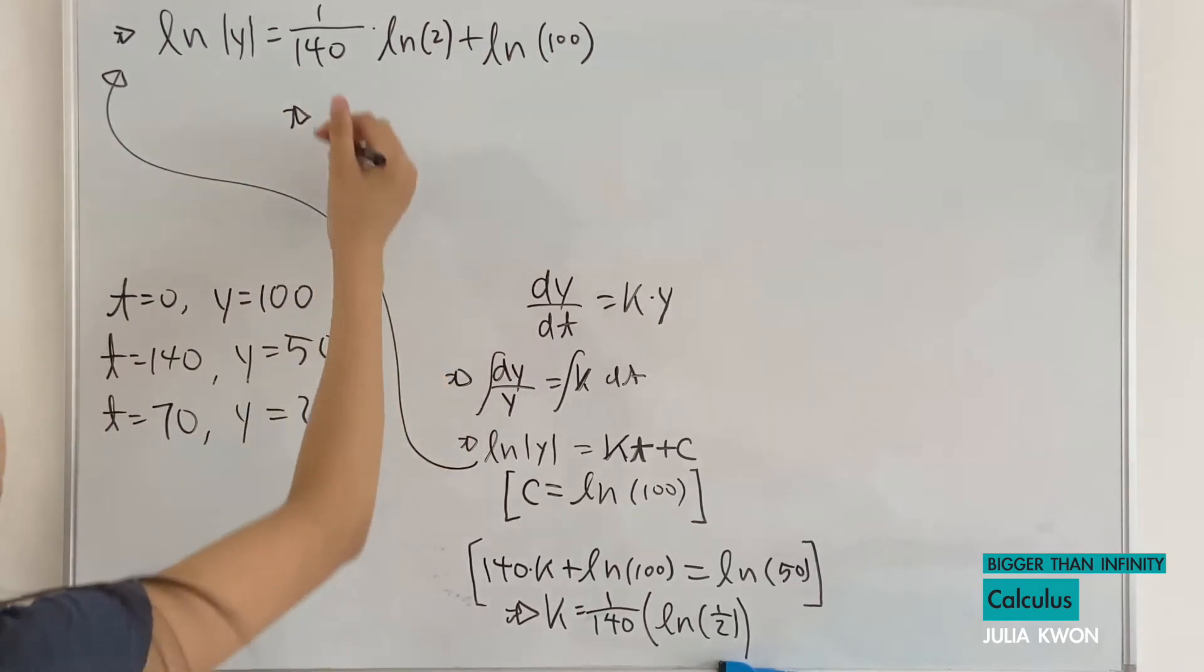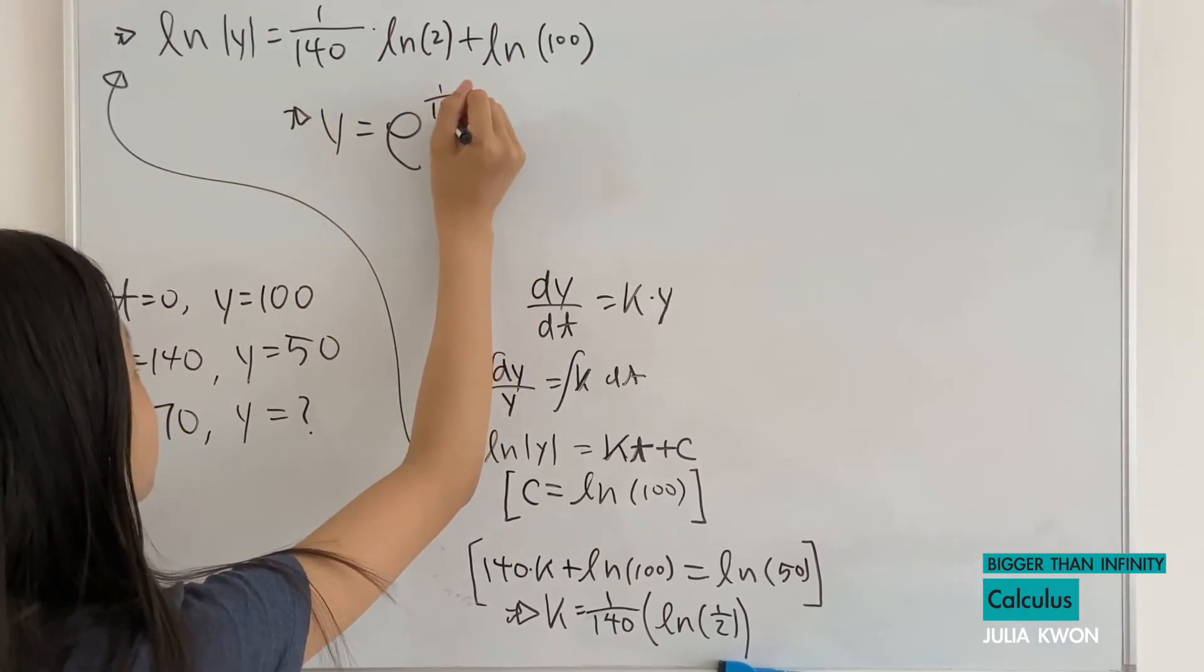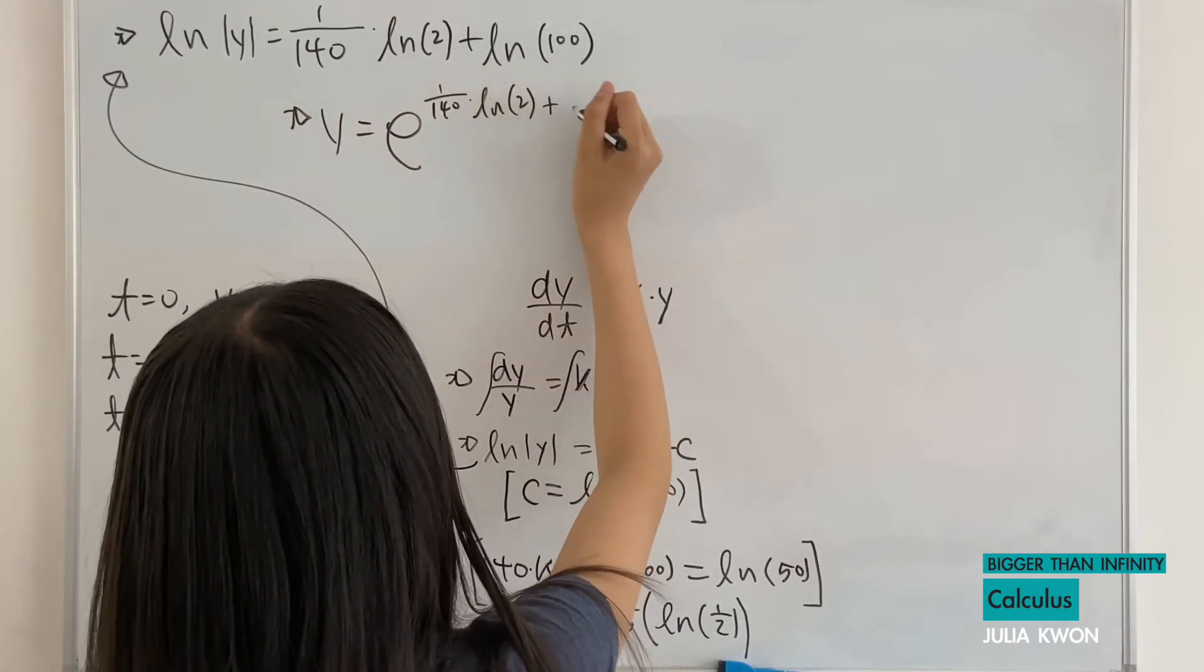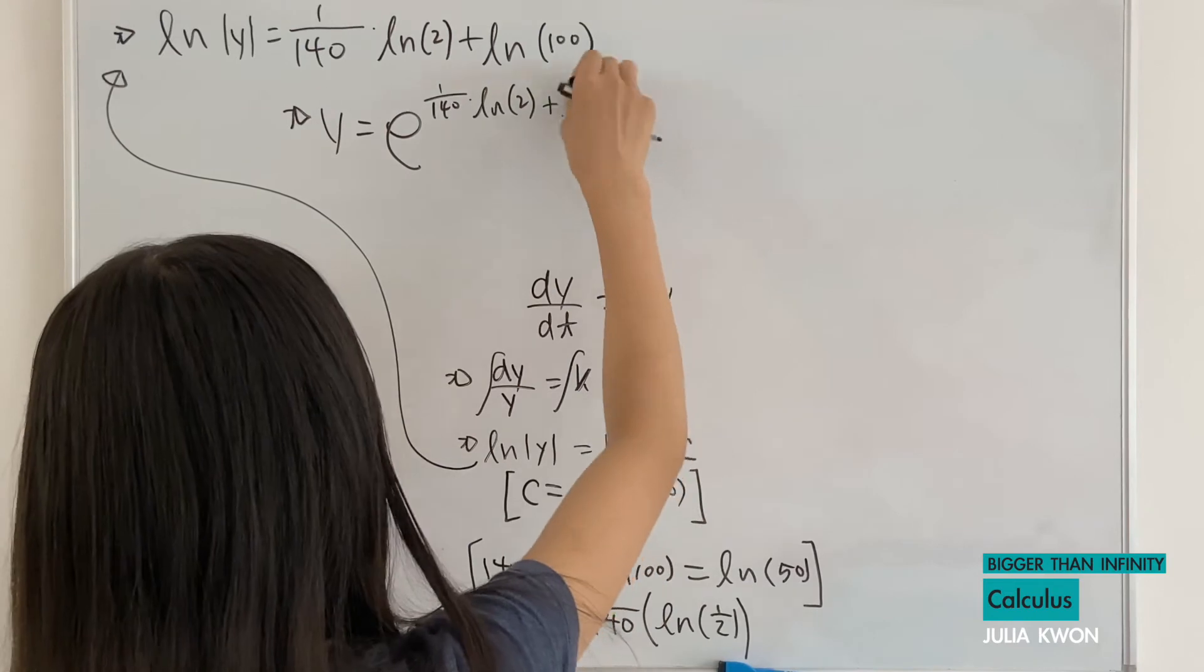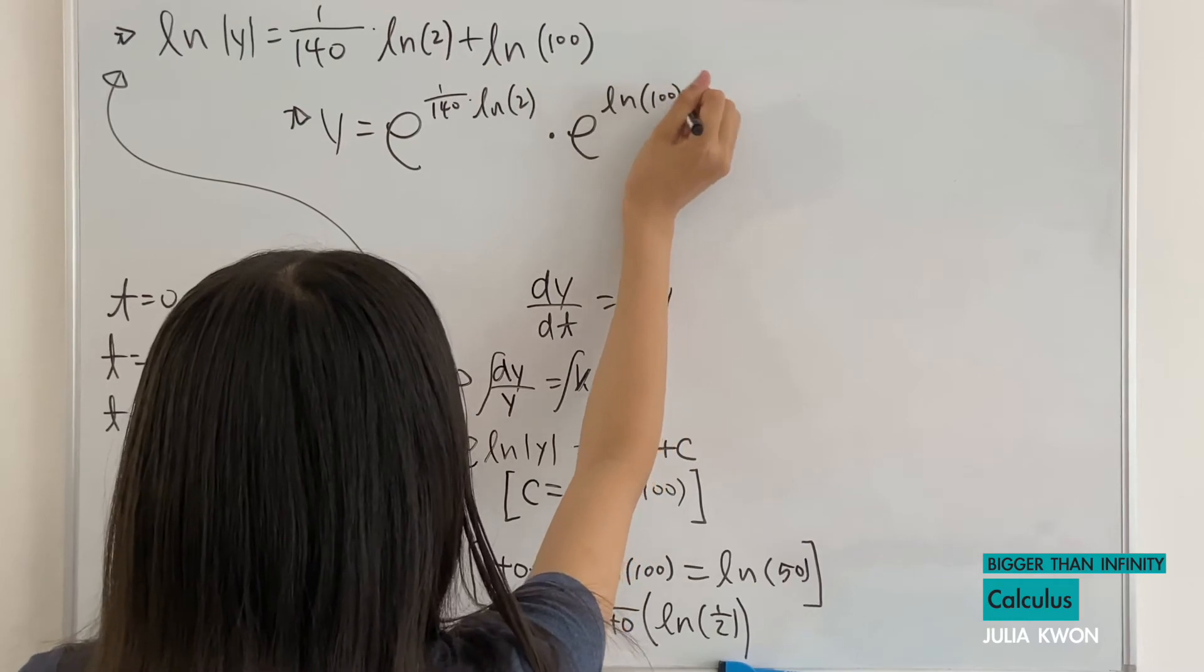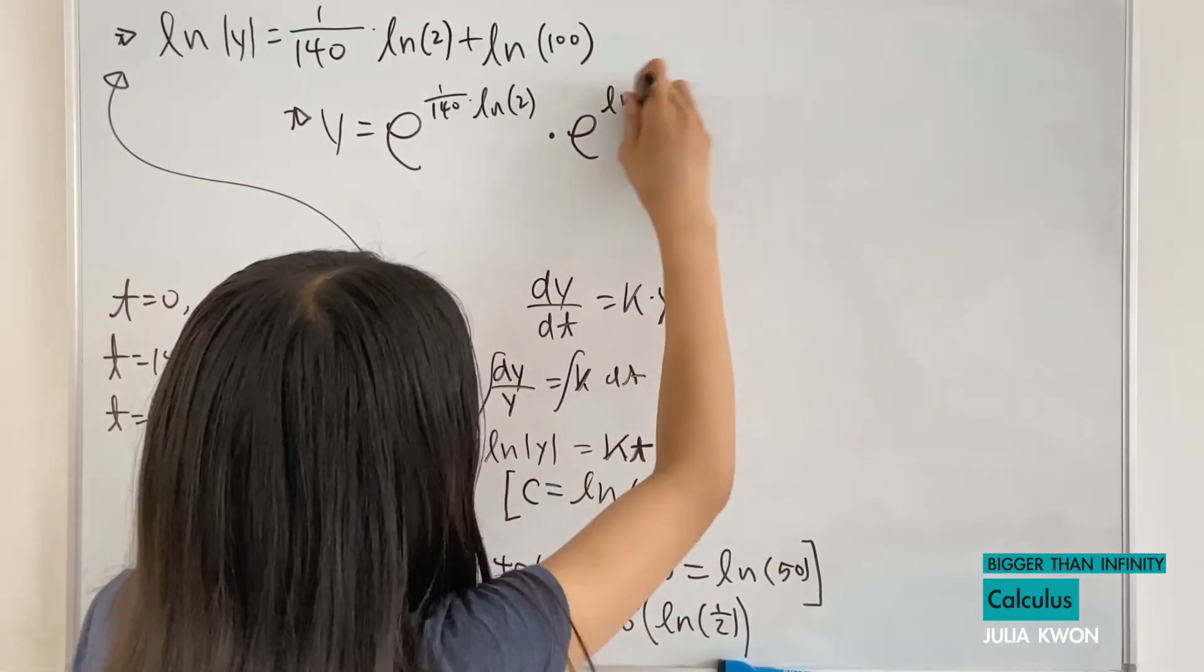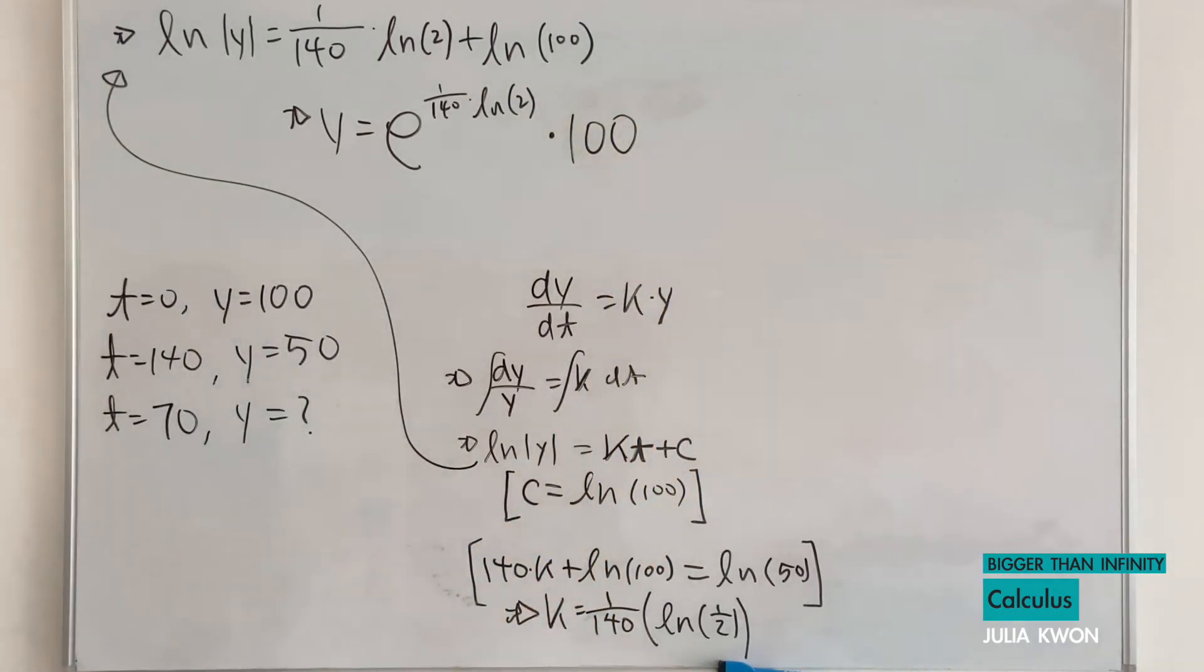And then we can solve for y. y would be equal to e to the power of all of this. 1 divided by 140 multiplied by ln of 2, plus ln of 100, which we can change so that we'll have all of this multiplied by e to the power of ln of 100. And the 100 and e can swap places that will make 100 to the power of ln of e, and ln of e is just one. This is just 100.